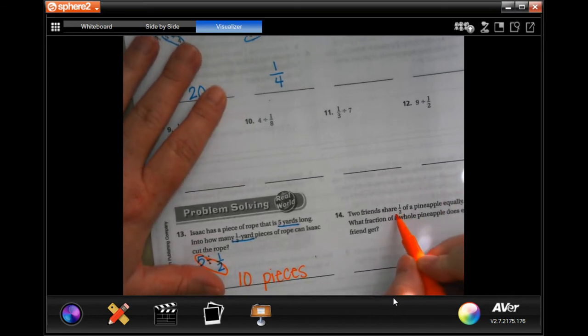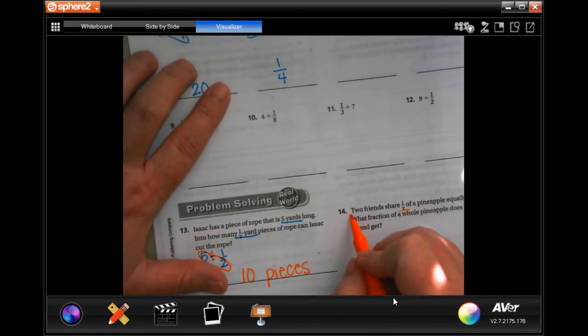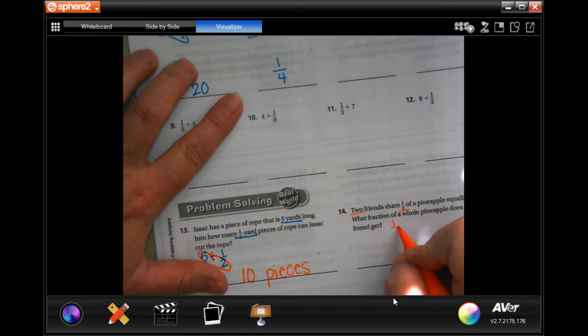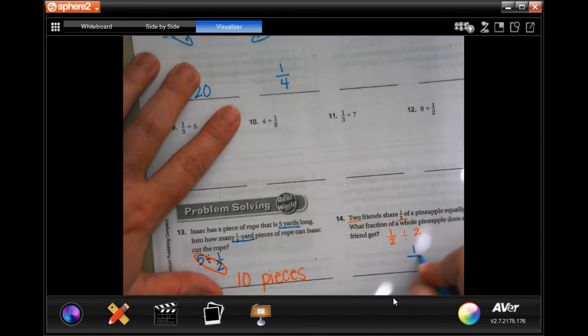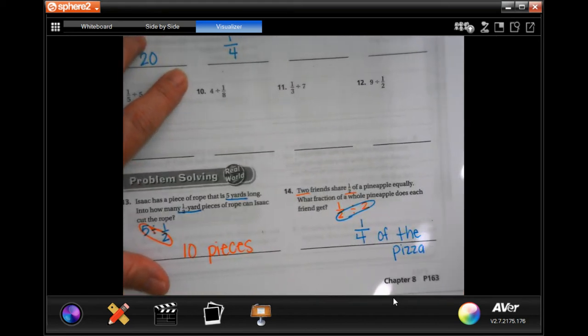Two friends share half of a pineapple pizza equally. So, 1 half divided by 2. We have a fraction being divided by a whole number. So, I'm going to have a 1 for my numerator, and I'm going to multiply these to get 4. 1 quarter of the pizza.